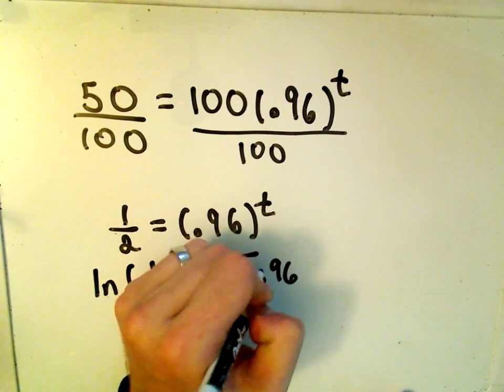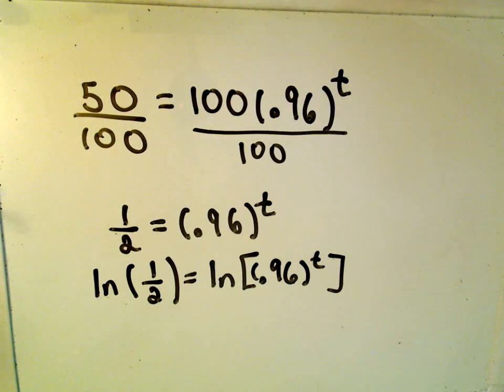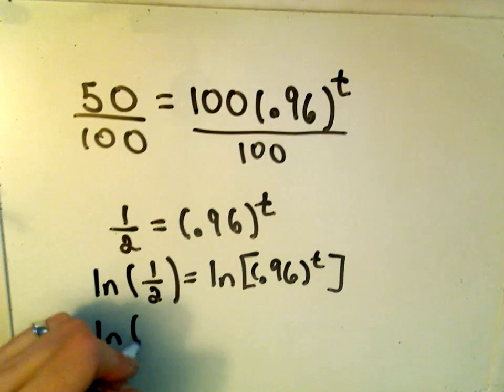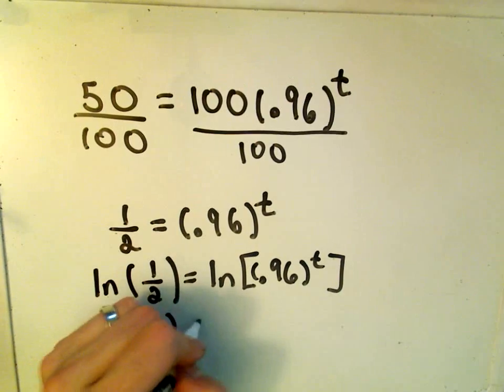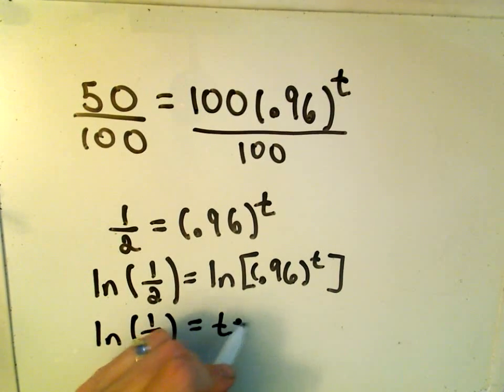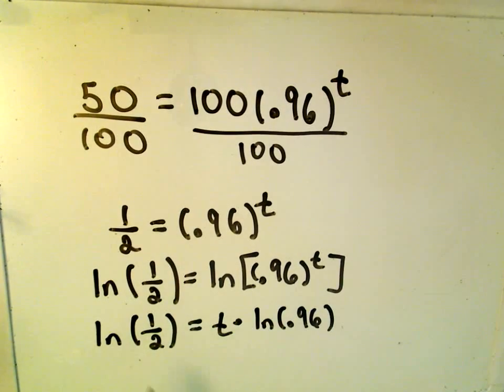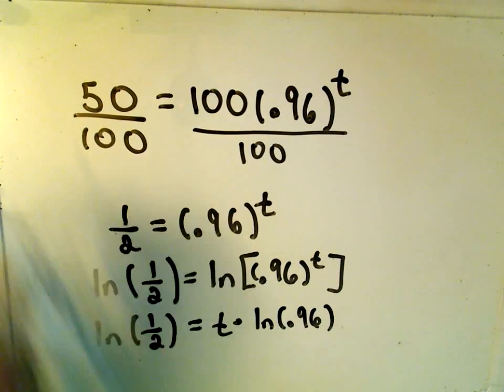So we have ln of 1 half equals ln of 0.96 raised to the t power. And remember the whole point of using natural logarithms is that on the right side, we can use this property that exponents come down as coefficients.